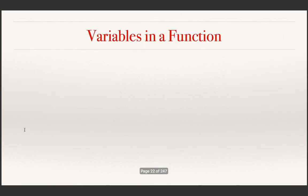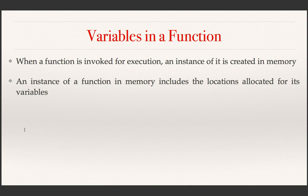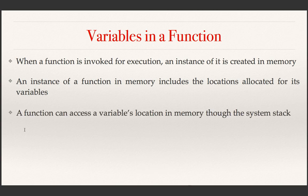Let us recollect what we did. When a function is invoked for execution, an instance of it is created in memory. An instance of a function in memory includes the locations allocated for its variables. Other than this it includes the code, etc., but we need not consider that for the purpose of discussing pointers. A function can access a variable's location in memory through what is called a system stack.